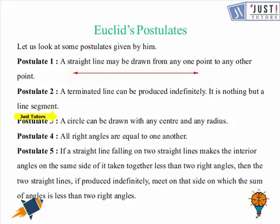Postulate number three: a circle can be drawn with any center and any radius. Postulate number four: all right angles are equal to one another. Postulate number five: if a straight line falling on two straight lines makes the interior angles on the same side together less than two right angles, then the two straight lines, if produced indefinitely, meet on that side where the sum of angles is less than two right angles.